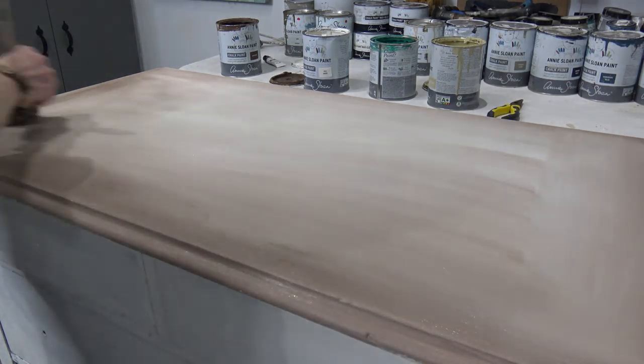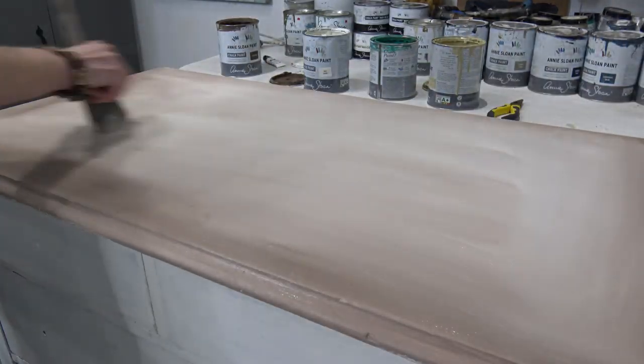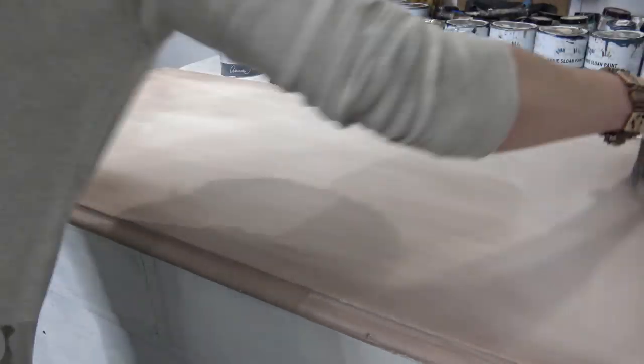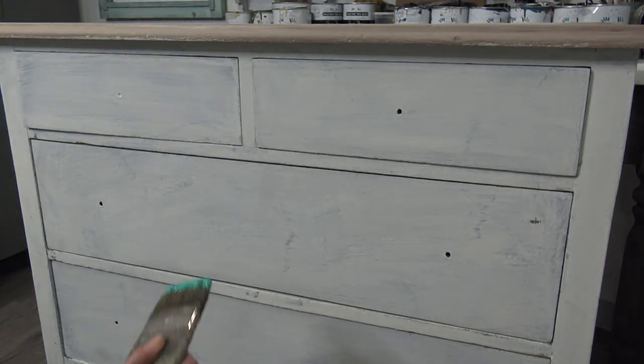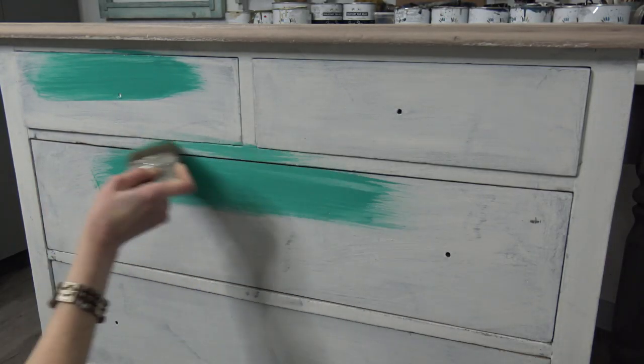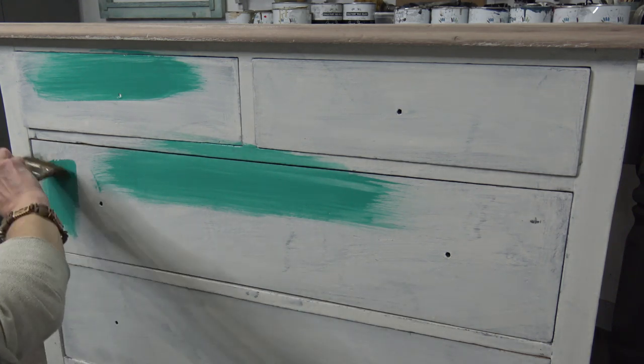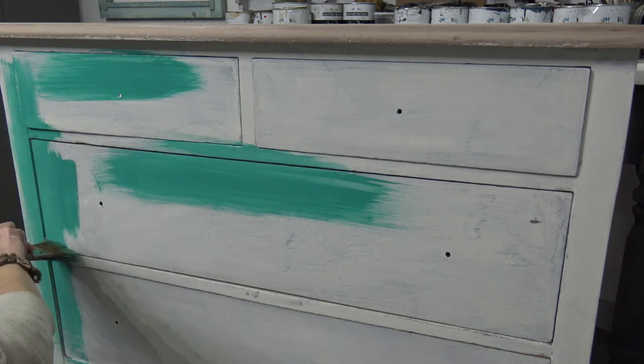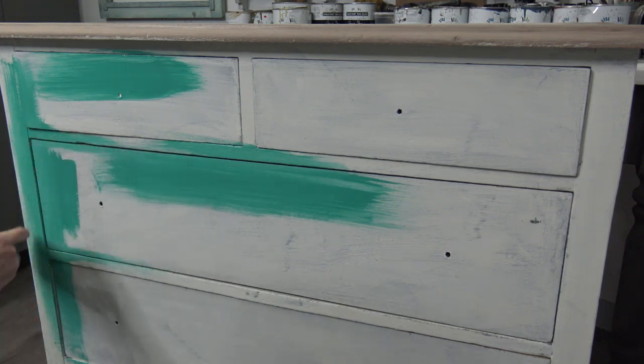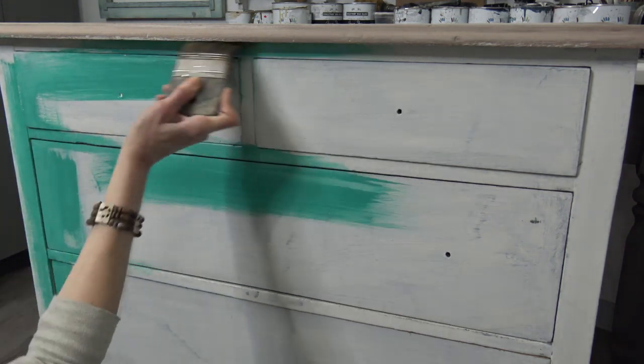For this tabletop, I wanted a nice neutral taupey slightly tanned color. I'm going to leave that so I can head over to the front of the dresser. I'm taking Florence, this beautiful green color, and I'm going with my second coat.